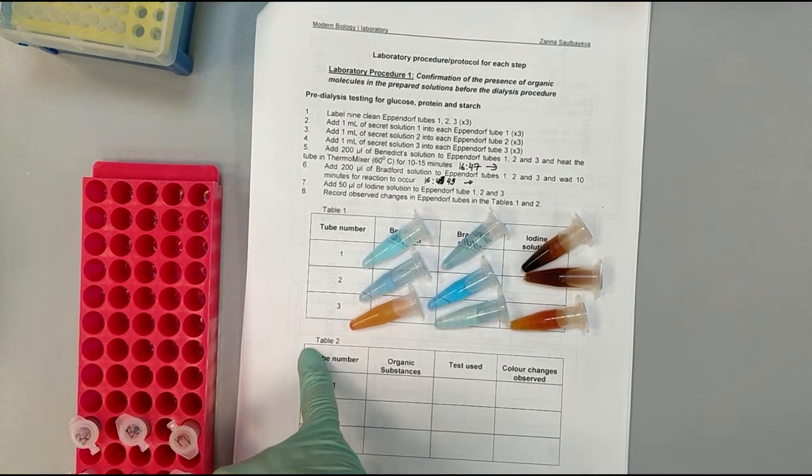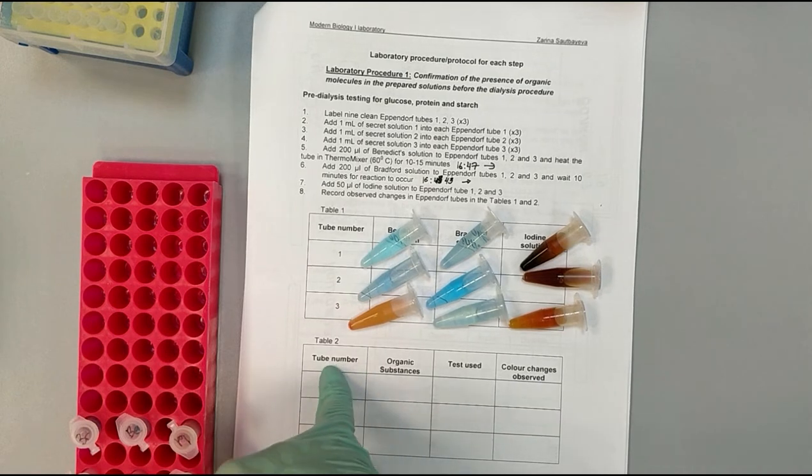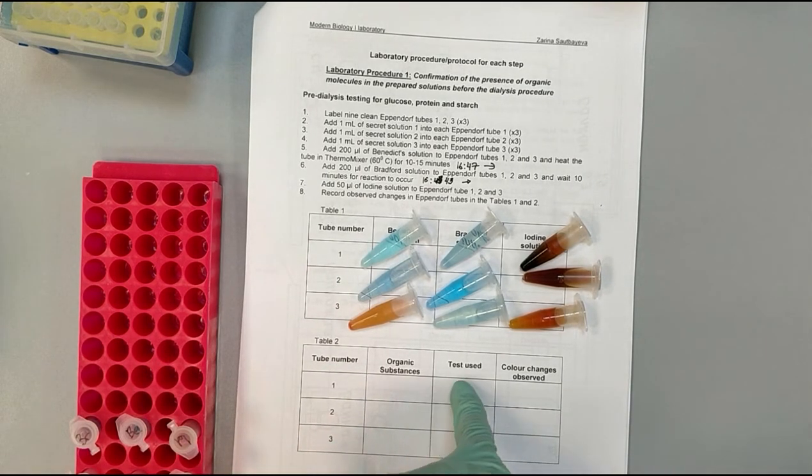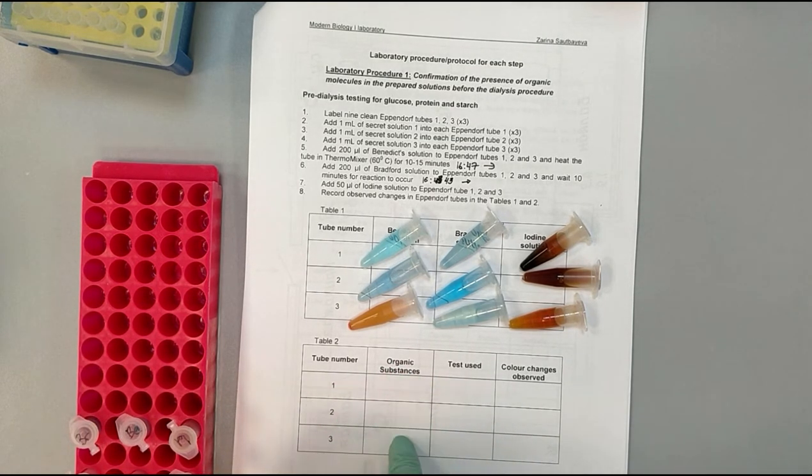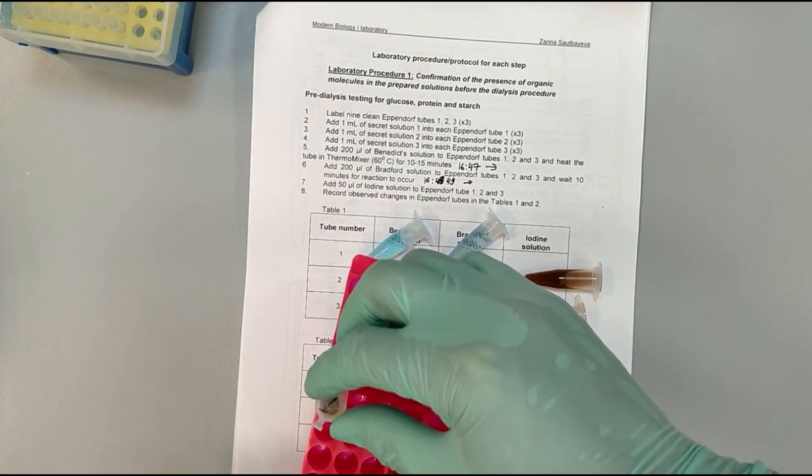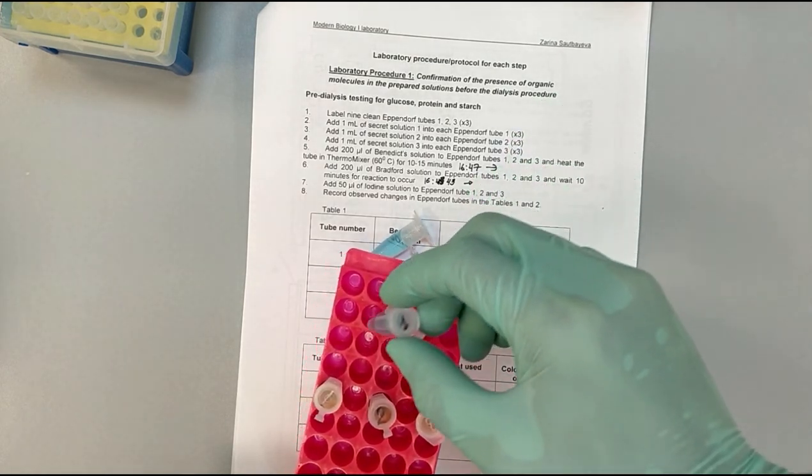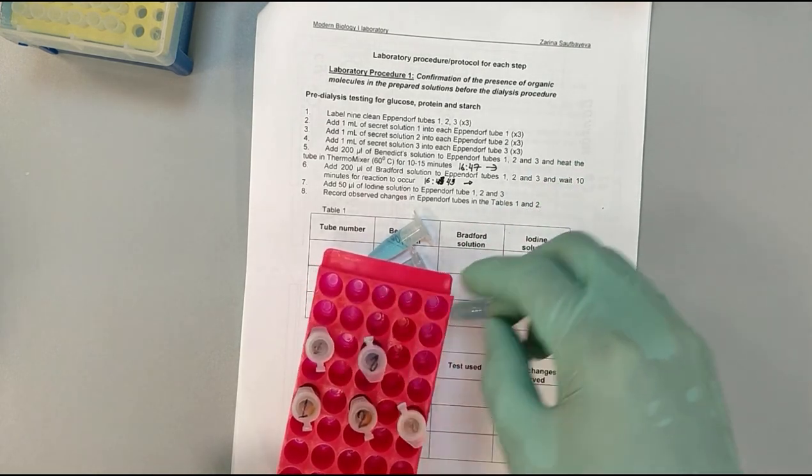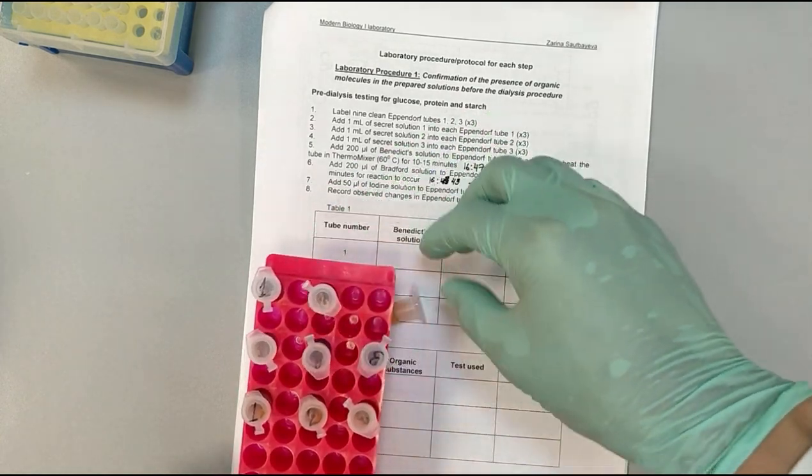In table 2, you are going to write what reaction happened in which of the tubes. You are going to say which test is used, what is the color change, so the reaction, and guess is the organic substance in each of these tubes. You are going to write what reaction happens.